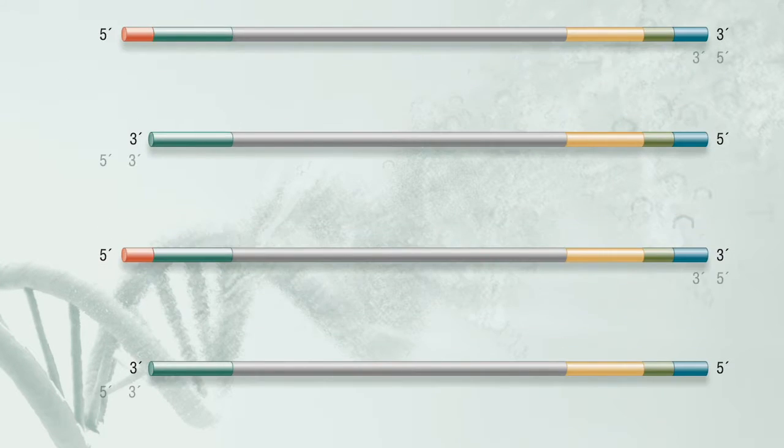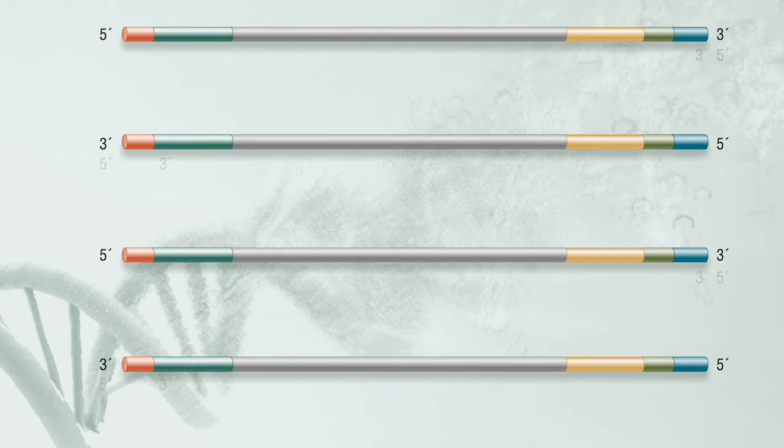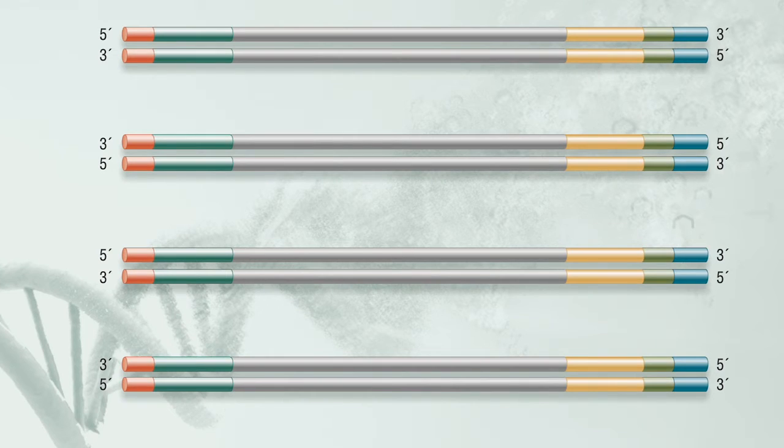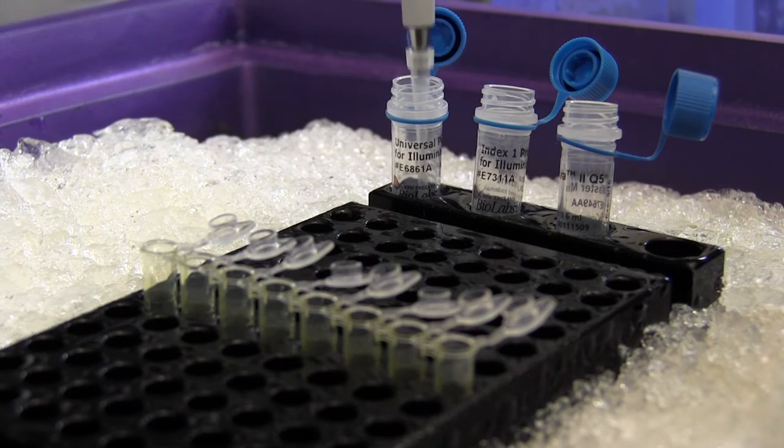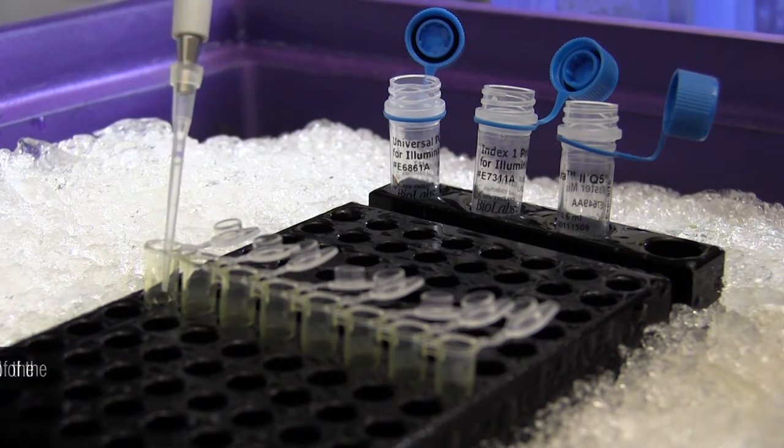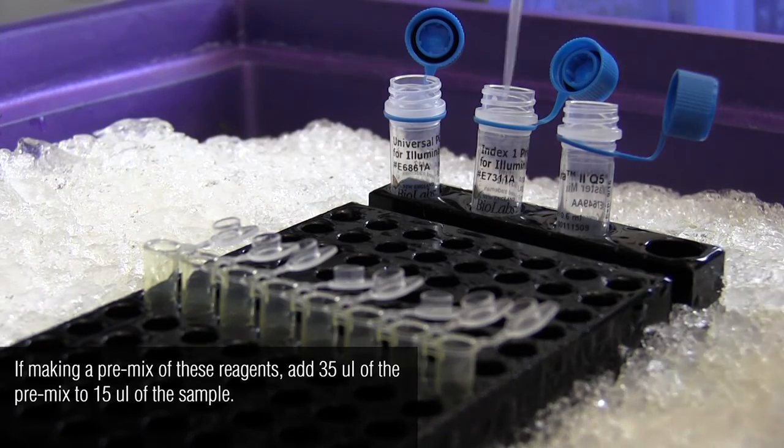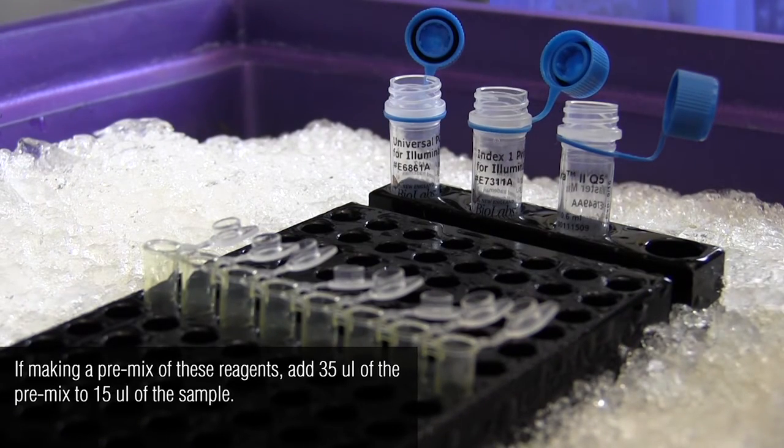For multiplexed libraries, indices or barcodes can be introduced at this step if the NEBNext adapter and primers are used. To each sample, add the universal PCR primer, an index primer, and the ULTRA2 Q5 master mix which are in the blue capped vials. Mix thoroughly as shown previously.